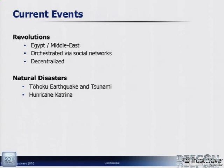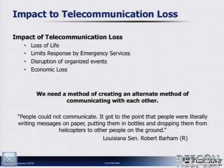Current events: one of the things that have hit home recently in the news is Egypt and the Middle East specifically. A lot of these revolutions were created by social networking, and that's actually one of the reasons why the telecommunications systems have been shut down. The revolutions themselves are typically decentralized. And then there are natural disasters — earthquakes, tsunamis, hurricanes — communities that are hit every year that basically lose their telecommunication capabilities. There has to be a way around that to get information to individuals.